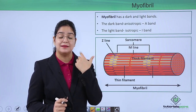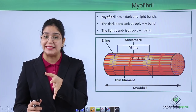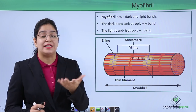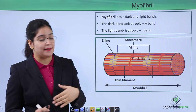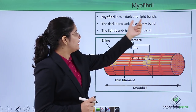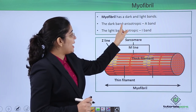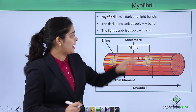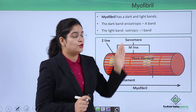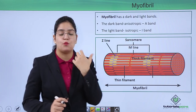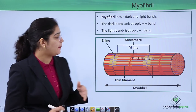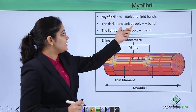Let's learn why these bands are called the A or I band. The word 'A' came from 'anisotropic' and 'I' came from 'isotropic'. Now, what do we mean by anisotropic and isotropic?